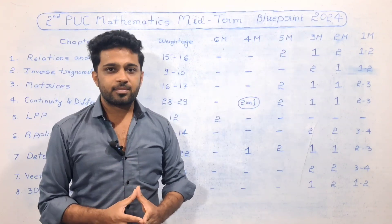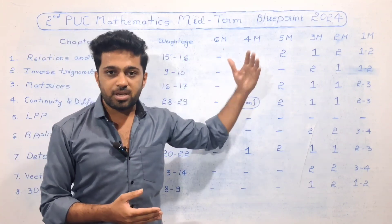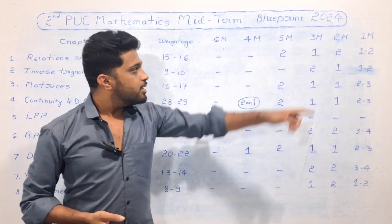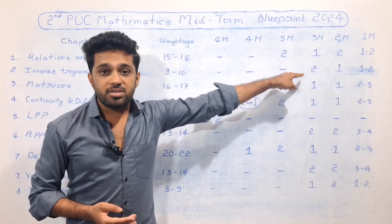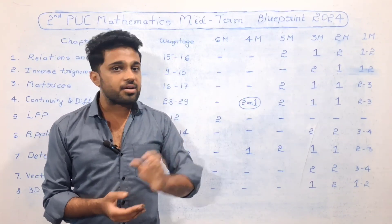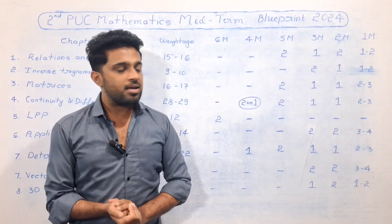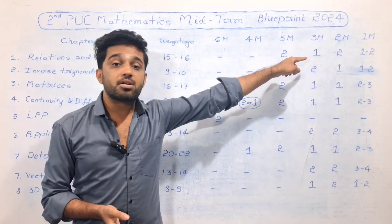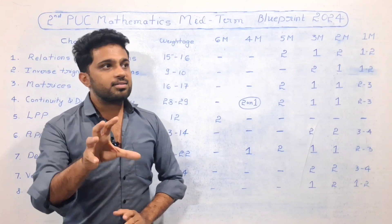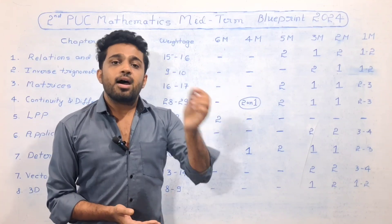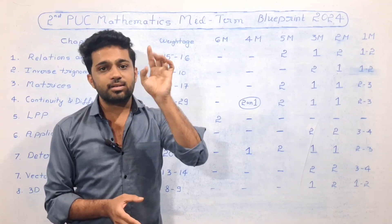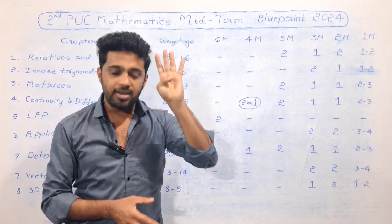Regarding the question paper pattern: there are 3-mark and 2-mark questions. Out of nine questions, you answer any six. There are also 2-mark questions which are important. For 3-mark questions, there are seven questions total — out of seven, you have to answer four.